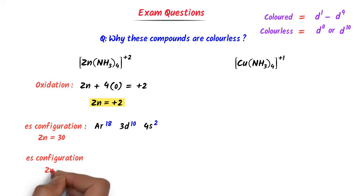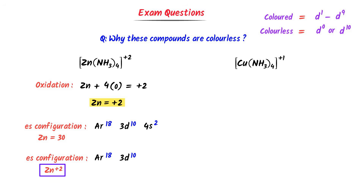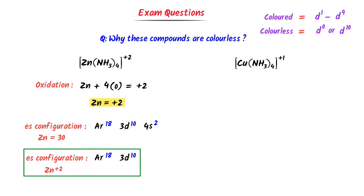We can see that the metal atom zinc has 10 electrons in 3d. D-d transition is not possible because the d-orbitals are completely filled. Thus this compound is colorless.